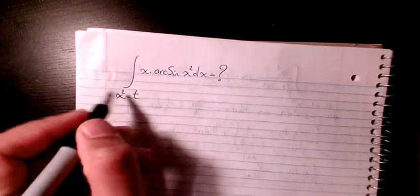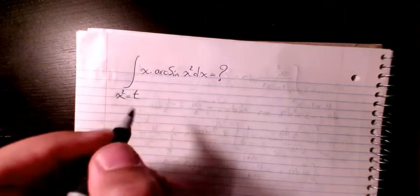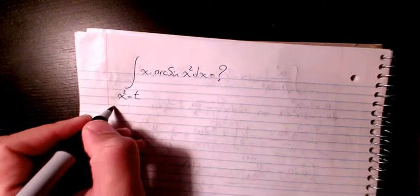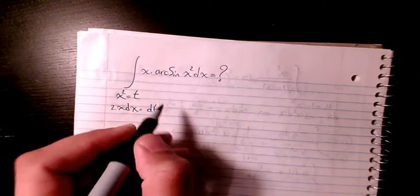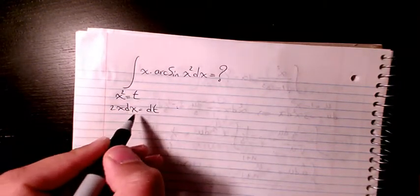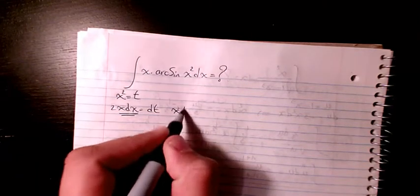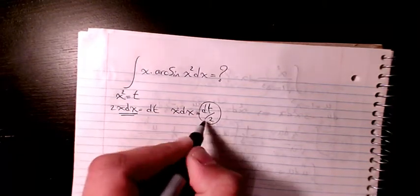I'm gonna consider x² something like t, so I'm gonna use substitution method. Then 2x dx is gonna be equal to dt, so then x dx will be equal to dt over 2.